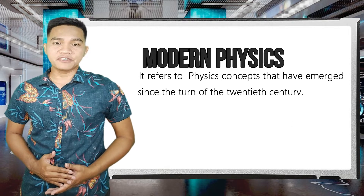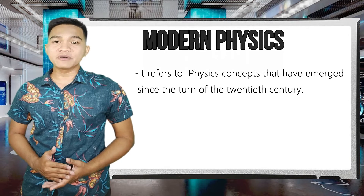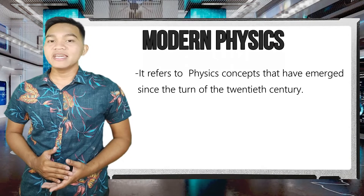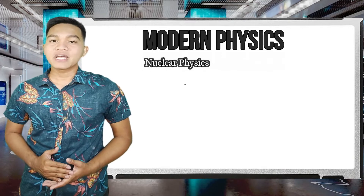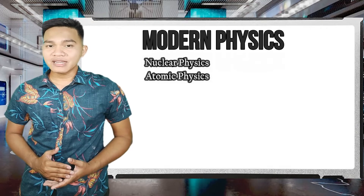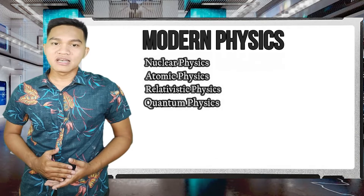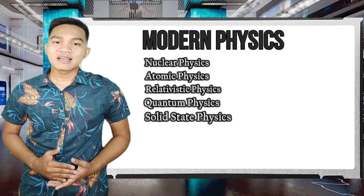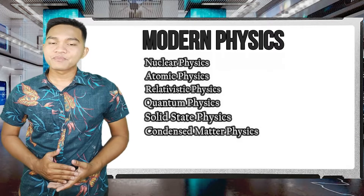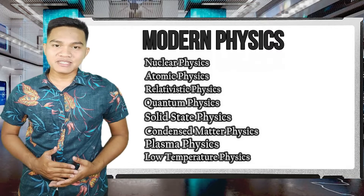Modern physics refers to the physics concepts that have emerged since the turn of the 20th century. It includes nuclear physics, atomic physics, relativistic physics, quantum physics, solid-state physics, condensed matter physics, plasma physics, and low-temperature physics.